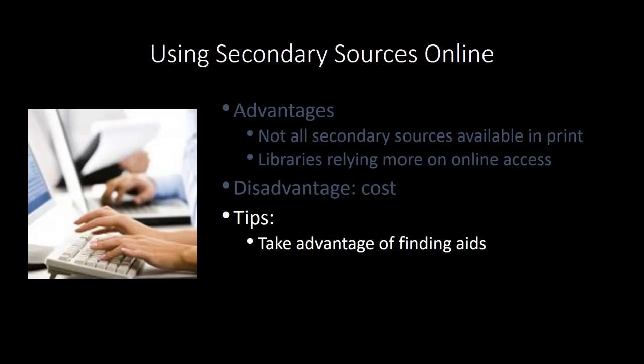First, when using secondary sources online, remember to take advantage of the finding tools we discussed for print secondary sources, like keyword indexes and tables of contents. Second, be aware that treatises are available in either Lexis or Westlaw, but not in both. If you are trying to search a specific treatise online, you will have to know who the publisher or provider is to access it. This is one of the reasons why the library catalog can be so valuable — it lists all the treatises and points you to all the places where they are available.